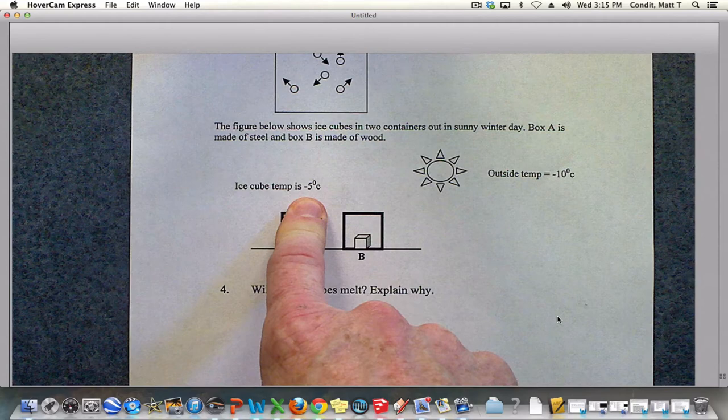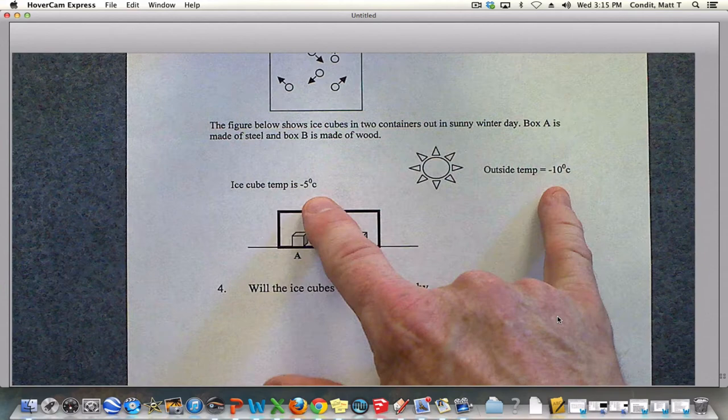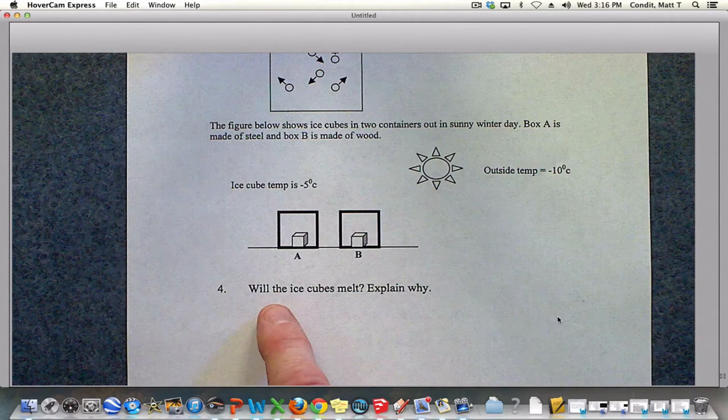The outside temperature is negative 10 degrees Celsius, while the ice cube temperature is negative 5 degrees Celsius. So even though that's cold, it's the warmest temperature here and hot always goes to cold.